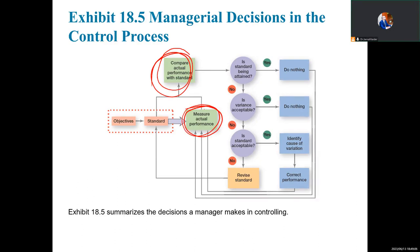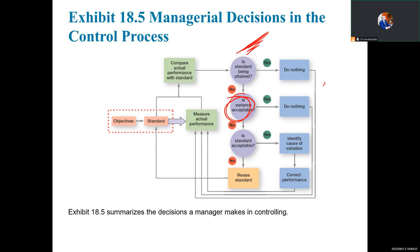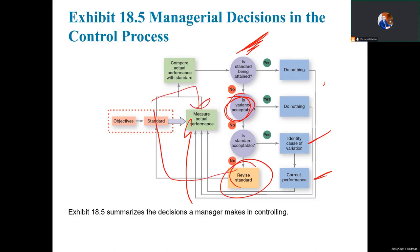It's quite self-explanatory. First, you need to ask whether the standard is attainable — if yes, do nothing. If no, ask whether the lack of performance is acceptable or not. Do nothing if acceptable; if not acceptable, think about whether the goals you devised are realistic or not. If realistic, lay down the causes and correct the performance. If not, revise the standard to be more measurable to actual performance, and then compare to find out whether you are on track.